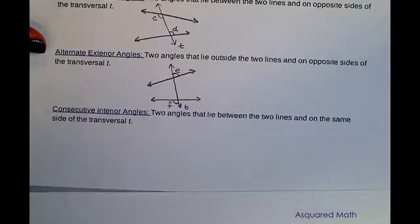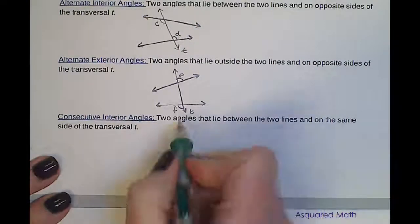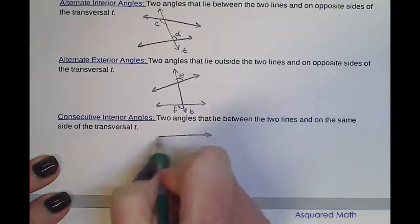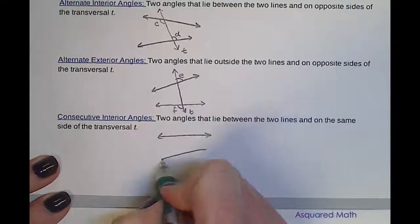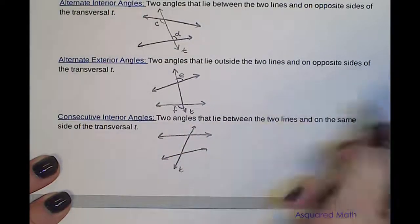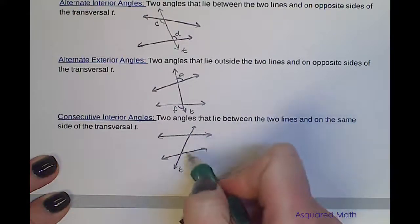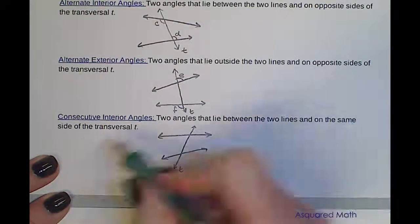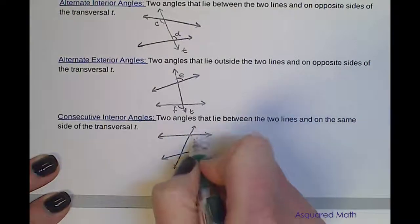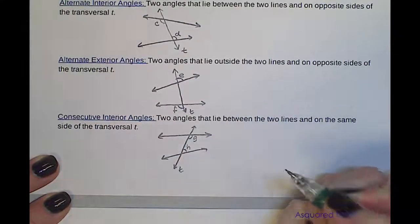The last type is consecutive interior angles. Again, we have two lines cut by a transversal T. These are two angles that lie between the two lines — inside — but this time they're on the same side of the transversal. So we're looking at angle G and angle H, both on the right side.